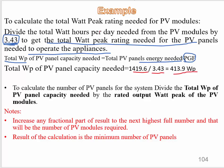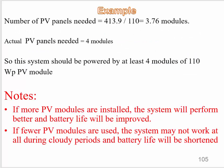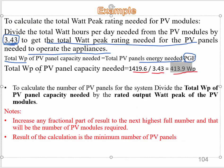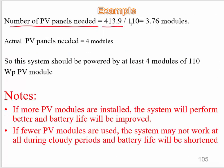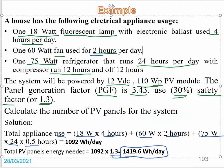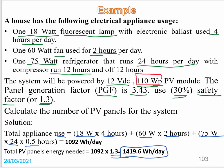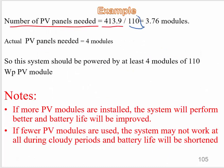To calculate the number of PV panels needed, we divide the total watt peak of PV panel capacity needed by the rated output watt peak of the PV modules. There are two notes: first, increase any fractional result to the next highest whole number; second, the result is the minimum number of PV panels required. We divide 413.9 by 110 Wp, since each solar panel provides 110 watt peak.